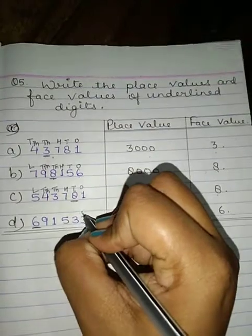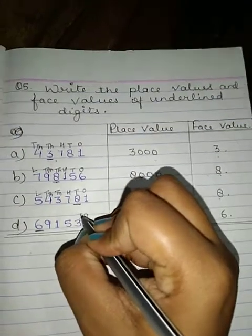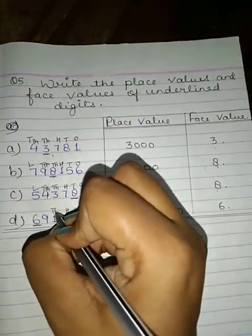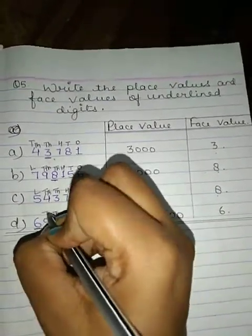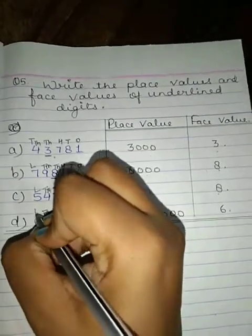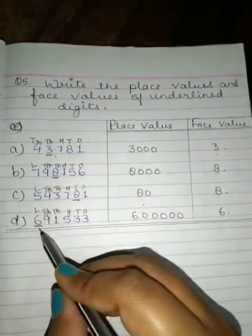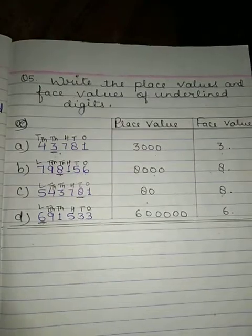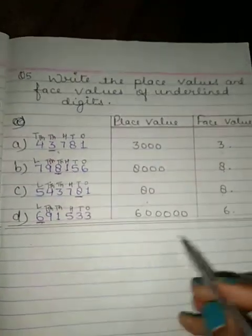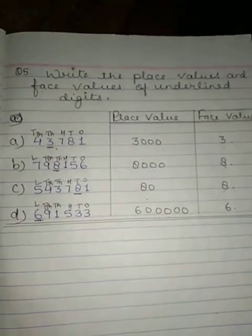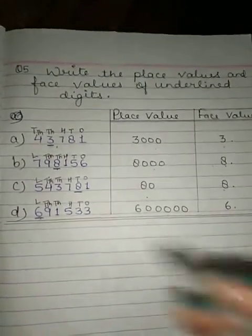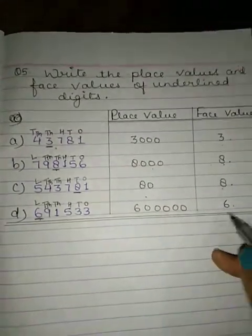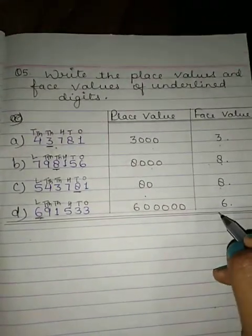In the next part, place values are: ones, tens, hundreds, thousands, ten-thousands, and lakh. The digit 6 is at the lakh place, so we write 6 lakh as its place value and the face value of 6 is 6.